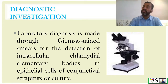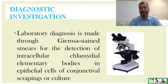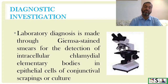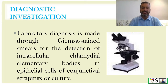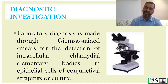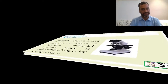How do we diagnose it? Laboratory diagnosis is made through Giemsa stain smears or detection of intracellular chlamydia bodies in the epithelial cells of conjunctival scrapings, or even with culture we can diagnose trachoma.